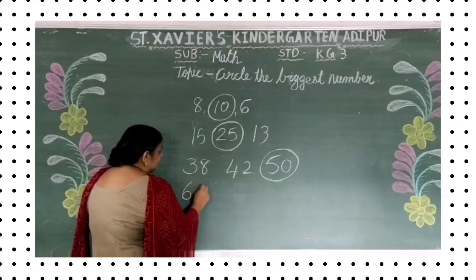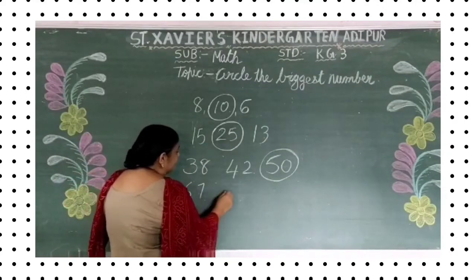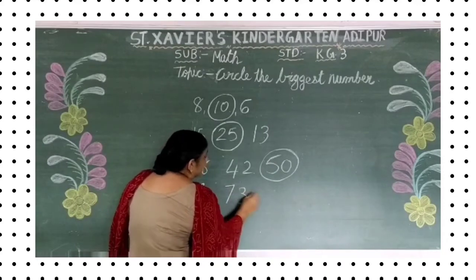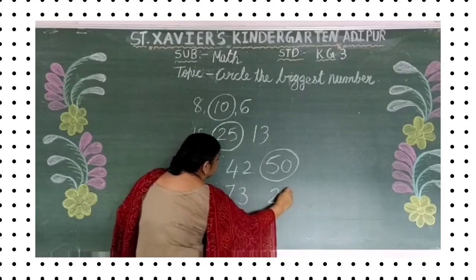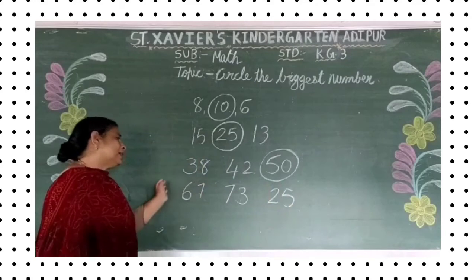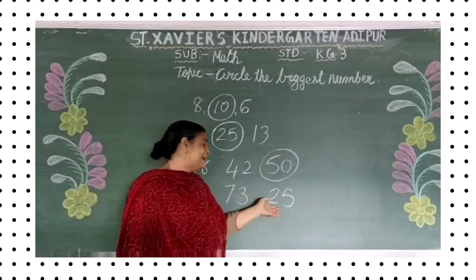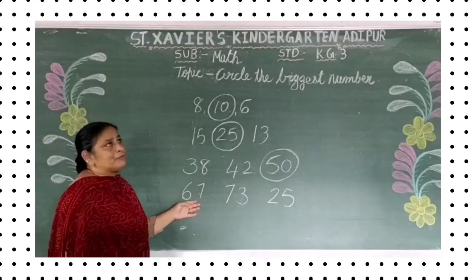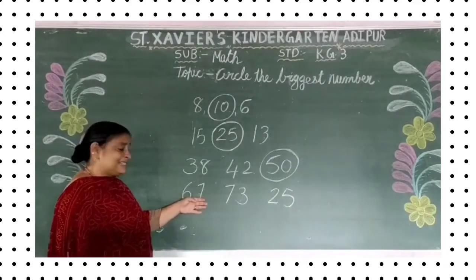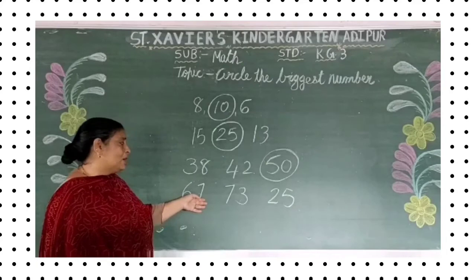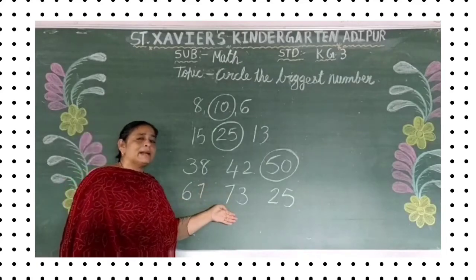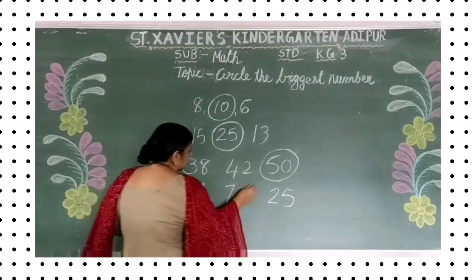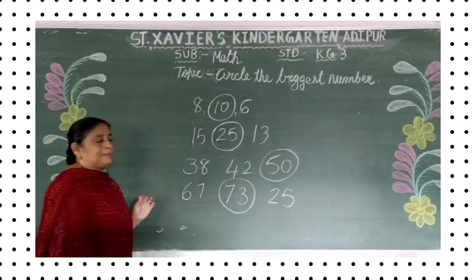Ok my dear student. Sixty-seven, seventy-three, and twenty-five. Yes, toh yaan peh twenty-five, then sixty-seven — six: one, two, three, four, five, six. Six ki baad kaunsa number aata hai? Seven. Toh six se bada seven hai. Toh seventy-three is the biggest number.